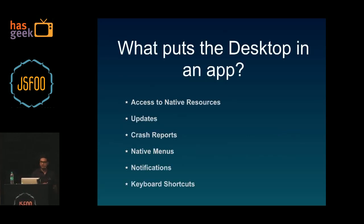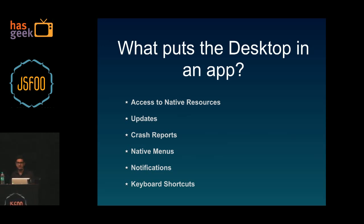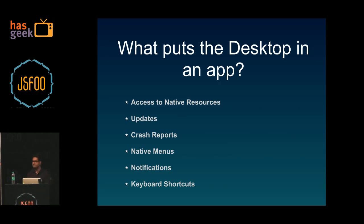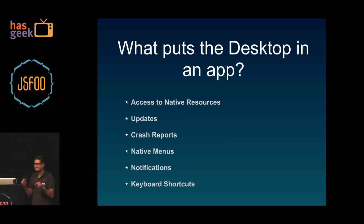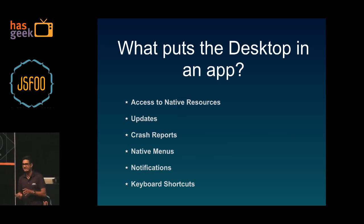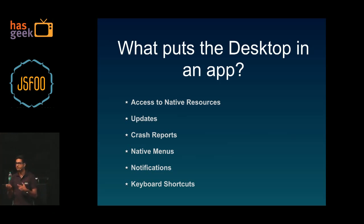Let's see what makes a desktop application. Desktop applications have always been very powerful — you have access to lower-level OS resources, or native resources as we call them. You used to have updates that would come and you would actually have to go and install them. Then you had crash reporting — anytime the application would crash, you could send a report back to the company that created it.